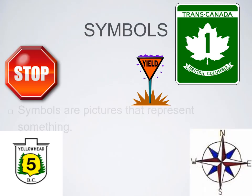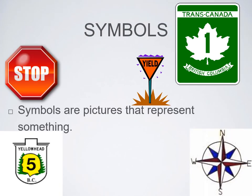Now for symbols. Symbols are essentially pictures or objects that represent something. Like in the top right corner, that symbol indicates the Trans-Canada Highway, which is the national highway across the entire country from one province to the other. You know that this is the main highway because it has the number one in it.